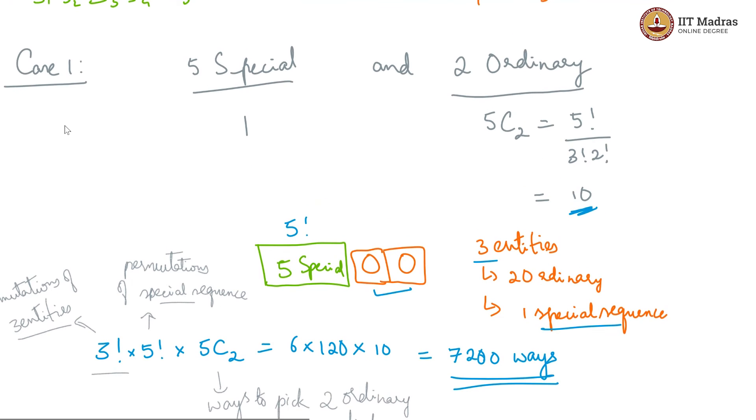This is for case 1 where you have 5 special and 2 ordinary. Now, let us look at case 2 which is 4 special. These 4 we get in a sequence and 3 ordinary, these we get as independent entities. Now we have as by our previous logic, we have 4 entities. These 4 special together is 1 entity and then each of the ordinary is 1 entity. Since you have 4 entities, we will have 4 factorial permutations.